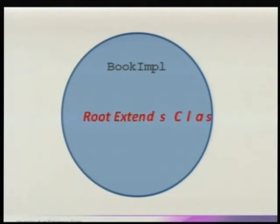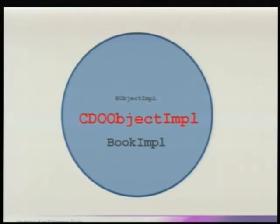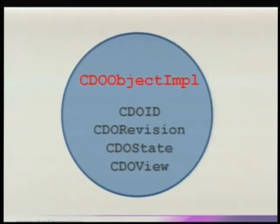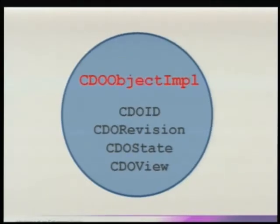We use a second generator property to insert a new base class for all generated objects: the CDO object implementation, which is an EObject implementation. Such a CDO object has always four fields: a technical ID assigned by the server to identify objects; a revision pointer, which can be quickly switched from older to newer revisions or vice versa when traveling back in time; the state; and the view.